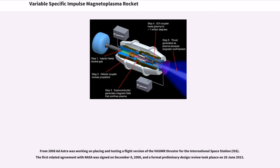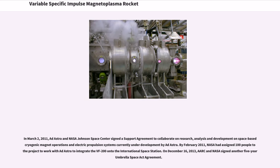From 2008, Ad Astra was working on placing and testing a flight version of the VASIMR thruster for the International Space Station. The first related agreement with NASA was signed on December 8, 2008, and a formal preliminary design review took place on June 26, 2013. In March 2, 2011, Ad Astra and NASA Johnson Space Center signed a support agreement to collaborate on research, analysis and development on space-based cryogenic magnet operations and electric propulsion systems currently under development by Ad Astra. By February 2011, NASA had assigned a 100-people TOEF project to work with Ad Astra to integrate the VX-200 onto the International Space Station. On December 16, 2013, ARC and NASA signed another five-year umbrella space act agreement.